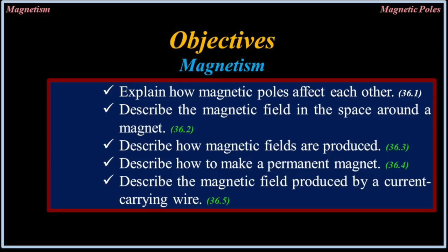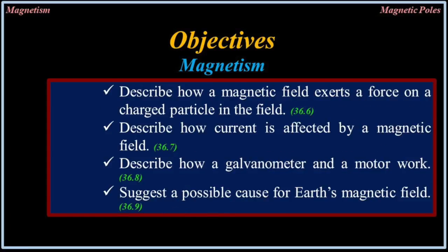Explain how magnetic poles affect each other. Describe the magnetic field in the space around a magnet. Describe how magnetic fields are produced. Describe how to make a permanent magnet. Describe the magnetic field produced by a current-carrying wire. Describe how a magnetic field exerts a force on a charged particle in the field. Describe how current is affected by a magnetic field. Describe how a galvanometer and a motor work. Suggest a possible cause for Earth's magnetic field.